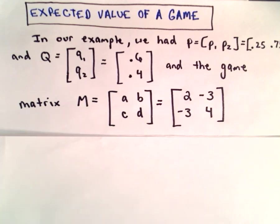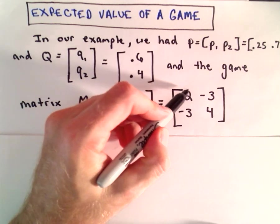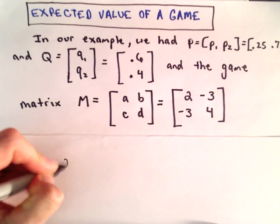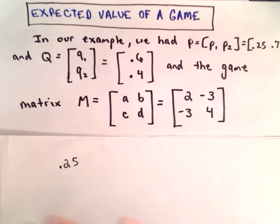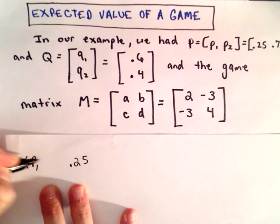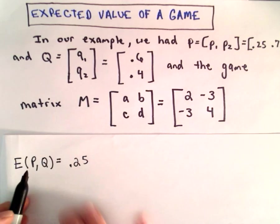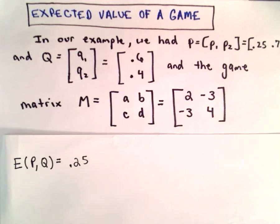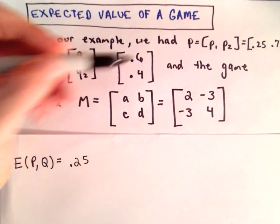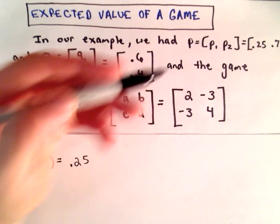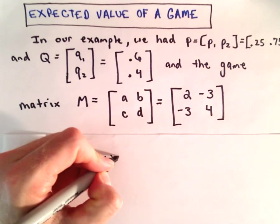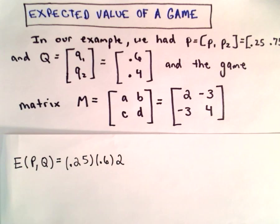The probability that the row player will choose the first row, we said that's 0.25. And the way we're going to abbreviate this, we're going to use E for expected value, and we're going to use the letters P and Q to indicate that we're using those probability matrices P and Q. So there's a probability that the first player will pick the first row with a probability of 0.25, and a probability that the column player will choose the first column with a probability of 0.6, and the net gain in this case would be 2 units for the row player.